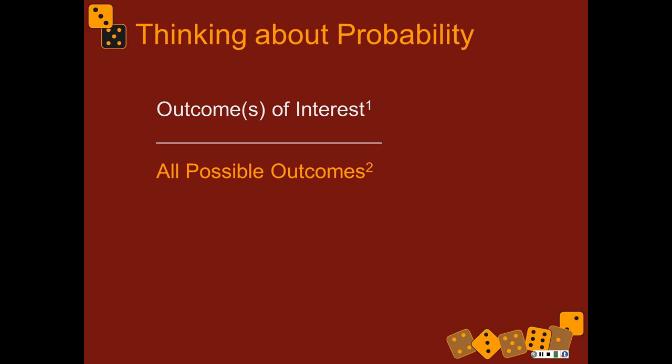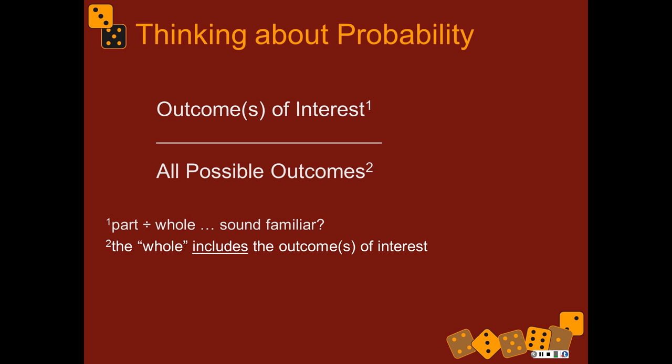And remember that the whole includes the outcome of interest. It's not 3 divided by the probability of a 1, 2, 4, 5, or 6. No — it's the number of ways a 3 can happen divided by all 6 ways that anything can happen. So that's probability in a nutshell. A bunch of things could happen and we're only interested in some of them. The likelihood is the number of ways our outcome can happen divided by the number of ways everything could happen.